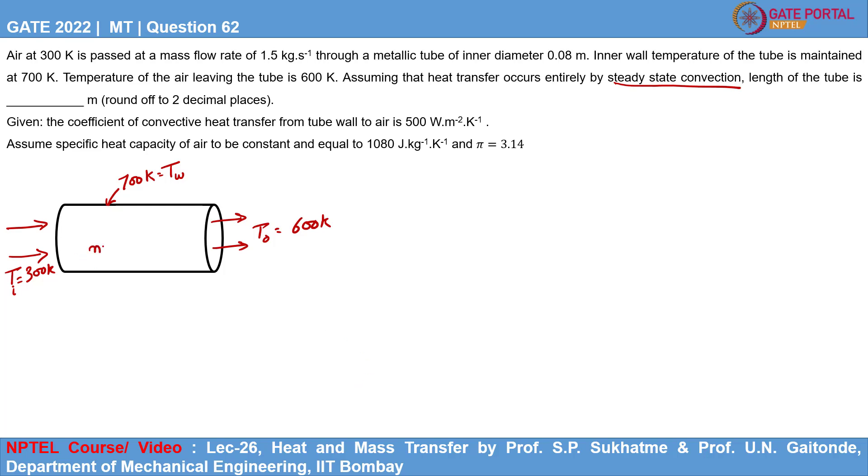And the mass flow rate of air is given to be 1.5 kg per second. Now the heat is transferring from the tube wall to the air by the mode of convection, where the value of H is given to be 500 Watt per meter square Kelvin.